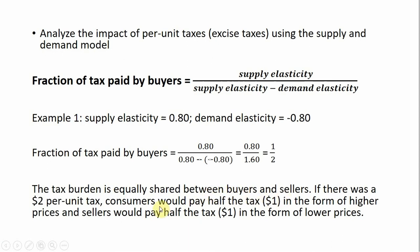So what does that mean? It means that the tax burden is equally shared between buyers and sellers. If there was a $2 per unit tax, for example, consumers would pay only half the tax, or $1, in the form of higher prices. And sellers would pay half the tax, $1, in the form of lower prices.